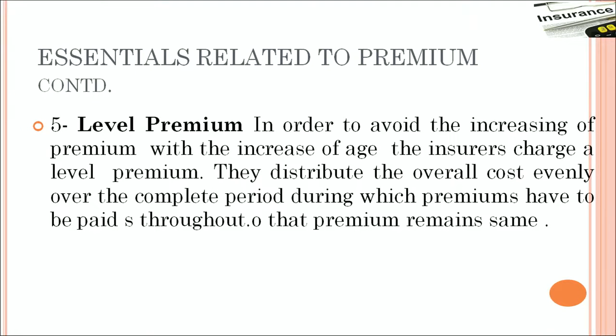Then we talk about the level premium. In order to avoid the increase of premium with the increase of age, insurers charge a level premium. We very well know that as we age our risk increases, but the premium does not increase — we always pay a constant premium throughout our tenure. When we buy a 20-year plan, the premium we pay today remains the same 10 or 15 years later. The insurer averages out this premium throughout, charging an average level premium rather than a low premium initially and a high premium in later years.